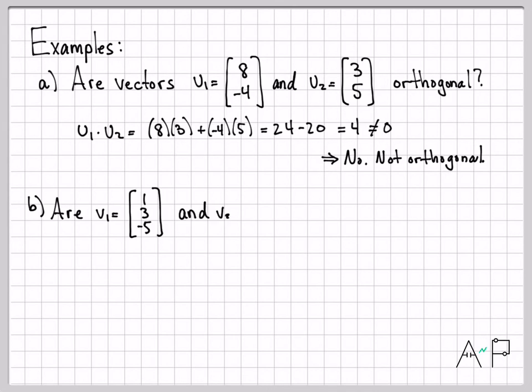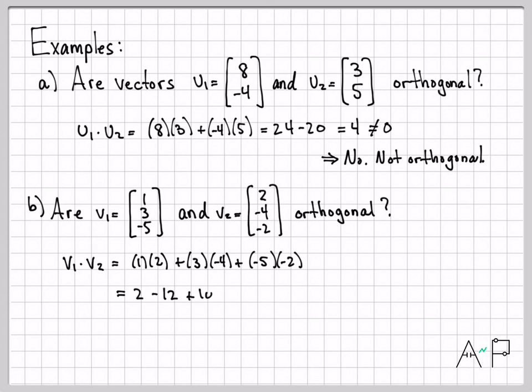What about the vectors v₁ and v₂? I picked a three-dimensional vector for this example. Are these orthogonal? All I have to do is check if v₁ · v₂ is 0 or not 0. So 1 times 2 plus 3 times negative 4 plus negative 5 times negative 2. That is 2 minus 12 plus 10, which is 0. So the dot product of v₁ and v₂ is indeed 0, so yes, these vectors are orthogonal to each other. That's our definition of orthogonal vectors—vectors are orthogonal if their dot product is 0, and not orthogonal if their dot product is non-zero.